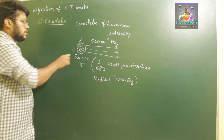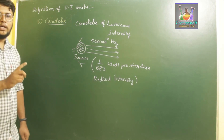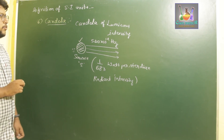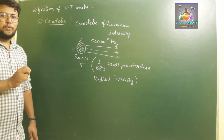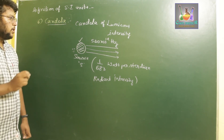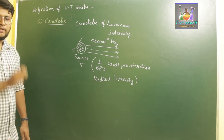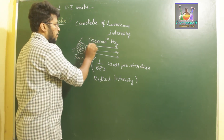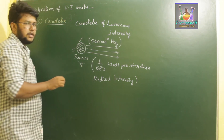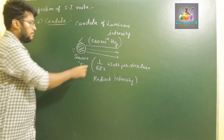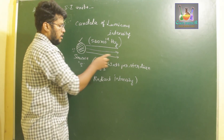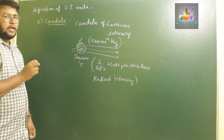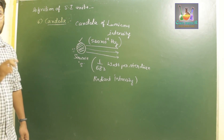A candela of luminous intensity is emitted by a source that emits radiation at 540 × 10¹² hertz and has a radiant intensity of 1/683 watts per steradian. The emitted light from such a source is said to be one candela. This is the definition of candela.